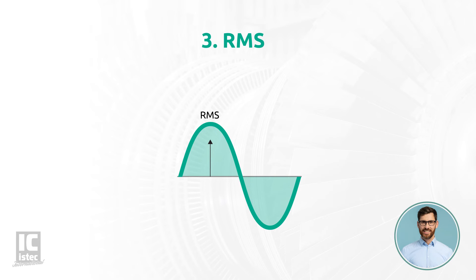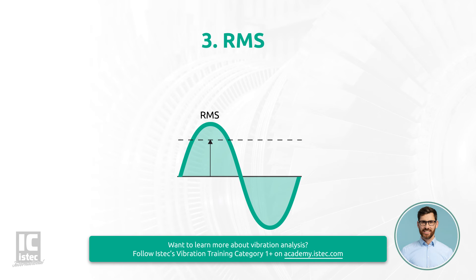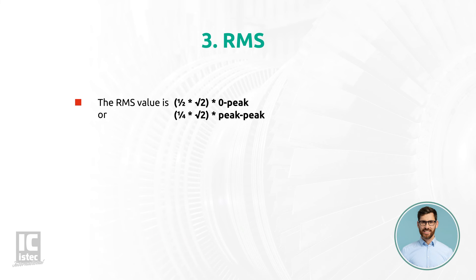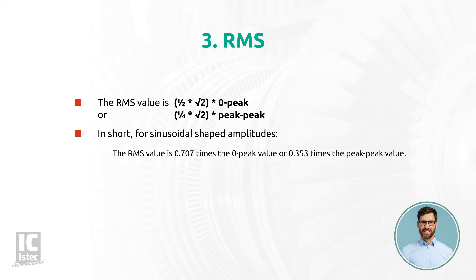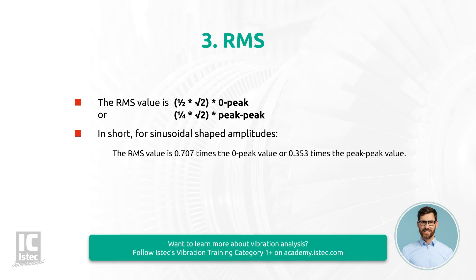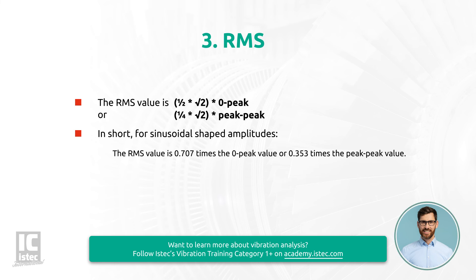The RMS value — root-mean-square, also known as the effective value — is the most common way to express a vibration level. For a purely harmonic movement, the RMS value is one-half times the square root of the zero-peak value, or one-fourth times the square root of the peak-to-peak value. In short, for sinusoidal-shaped amplitudes, the RMS value is 0.707 times the zero-peak value or 0.353 times the peak-to-peak value.